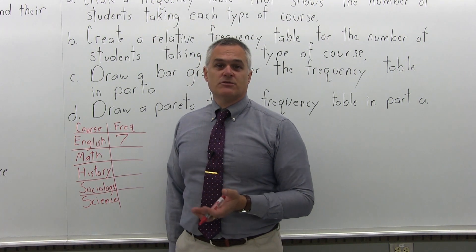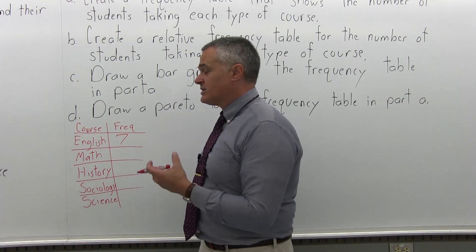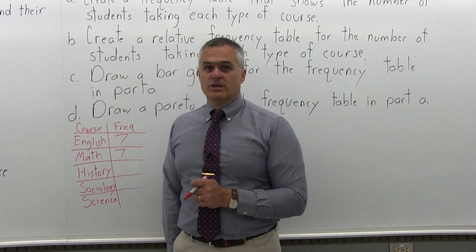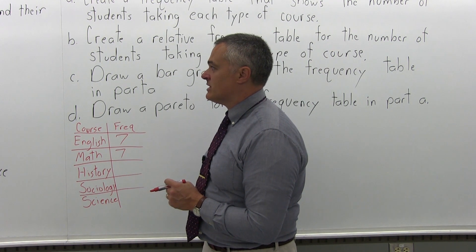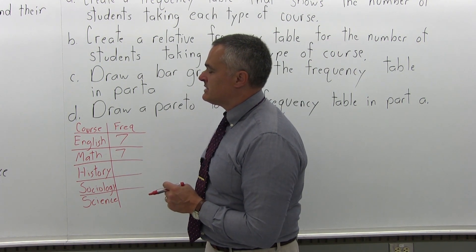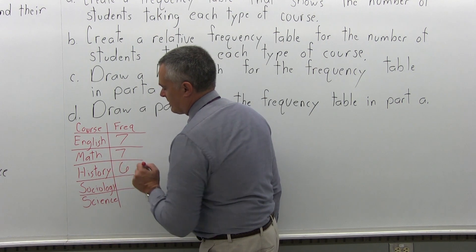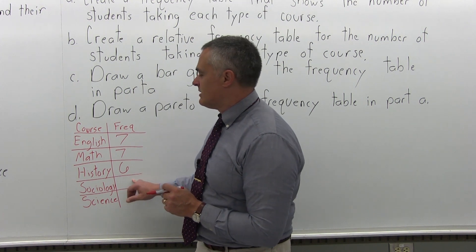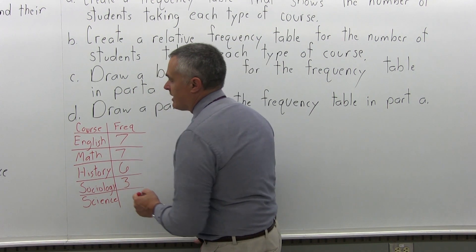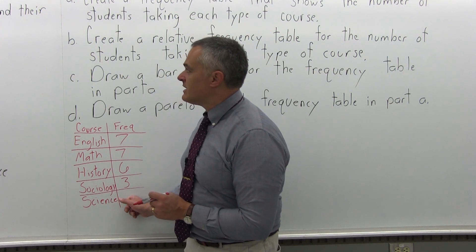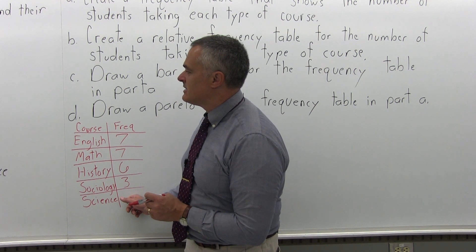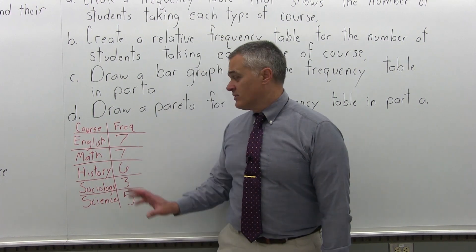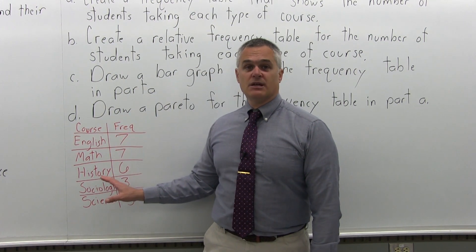For Math, if you count how many students are signed up for Math, you'll also see that there are seven signed up for Math. For History, if you count how many are signed up, you get six. If you count how many students are signed up for Sociology, there are three. And finally, if you count how many students are signed up for Science, I count five. So that's the answer to Part A — a frequency table for how many students are taking each type of course.